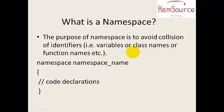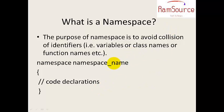That variable name, or else function names, or all class members — whatever it may be — in the identification, there will be a collision. So in order to avoid those collisions, we go for a namespace.